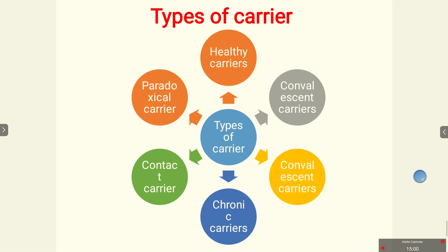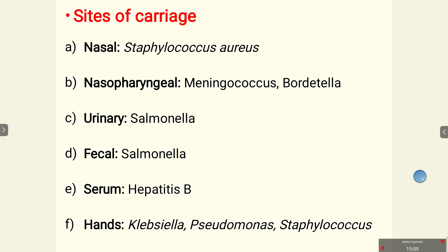Regarding sites of carriage, Staphylococcus aureus is normally present in the nasal tract; Neisseria meningitidis is normally present in the nasopharynx; Salmonella is found in fecal matter; Hepatitis B is present in serum; and Klebsiella and Pseudomonas reside in various sites as well. We will discuss more about host-pathogen interaction, including opportunistic pathogen infections, in our next class. Thank you.